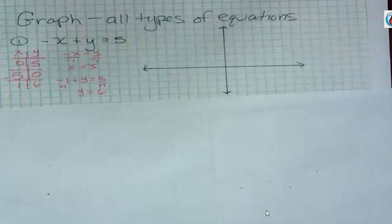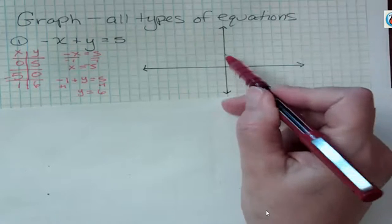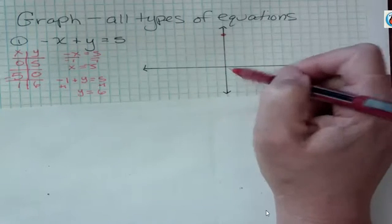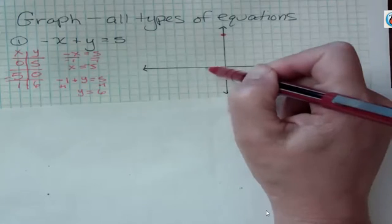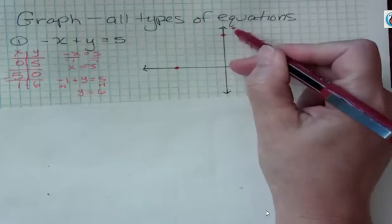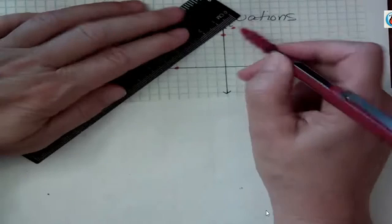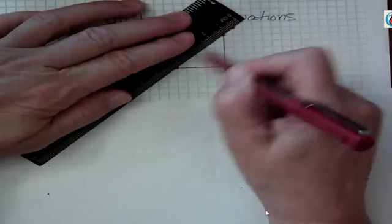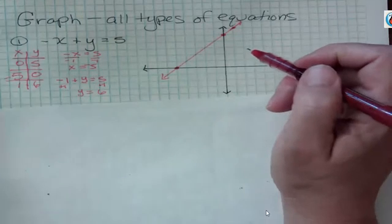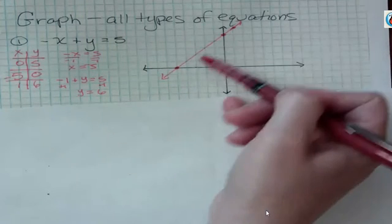If x is 0, y is 5. If y is 0, x is negative 5. And if x is 1, y is 6. If I've done this correctly, my three ordered pairs should fall in a line. That's why it's called a linear equation, because the graph of the solutions makes a line.